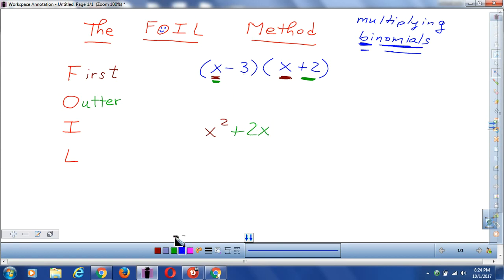Now we're going to do the inner terms. Inner. So the inner terms, like the outer were these green terms, the inner are going to be these purple terms on the inside. Negative three and x. Negative three and also x. So negative times positive makes negative. And three times x makes three x.